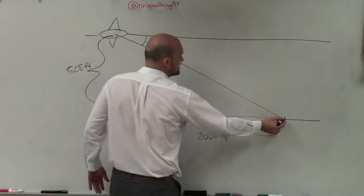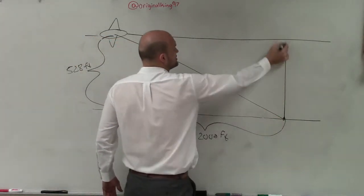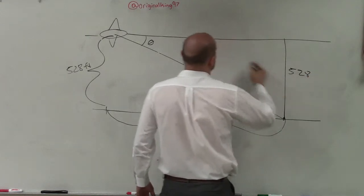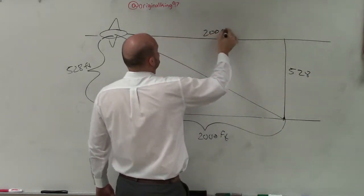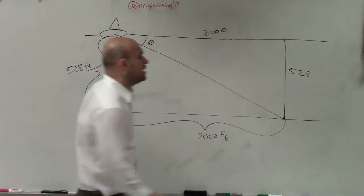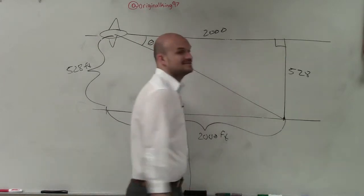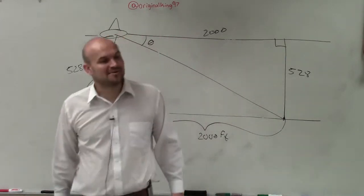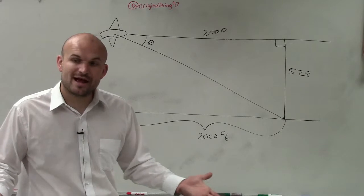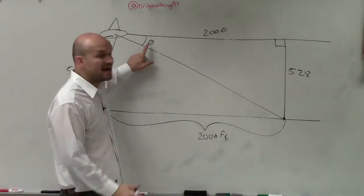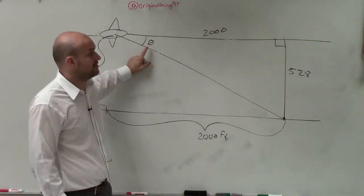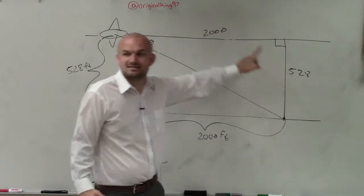If I draw a triangle, I know that this side is 528 and this side is 2,000. So now, drawing it out, it's a right triangle. What's nice about this right triangle is we have an angle we don't know that we're trying to figure out, and we have two sides.